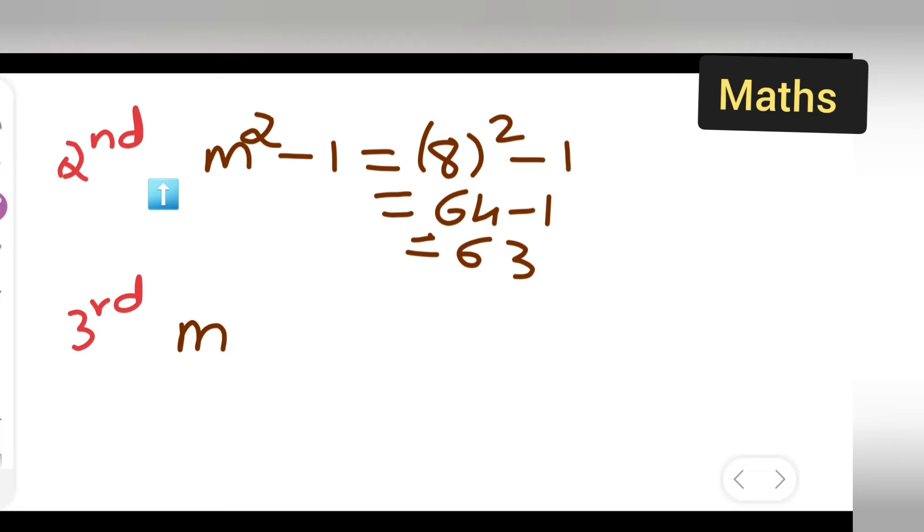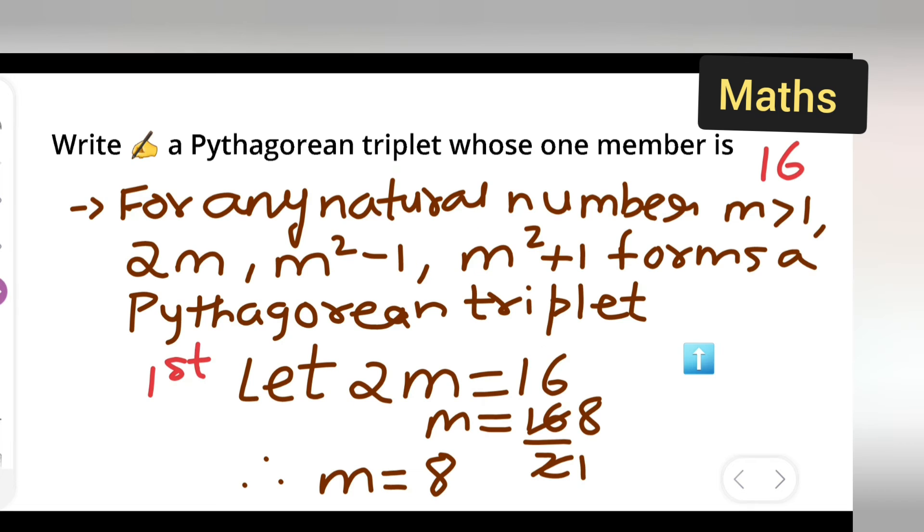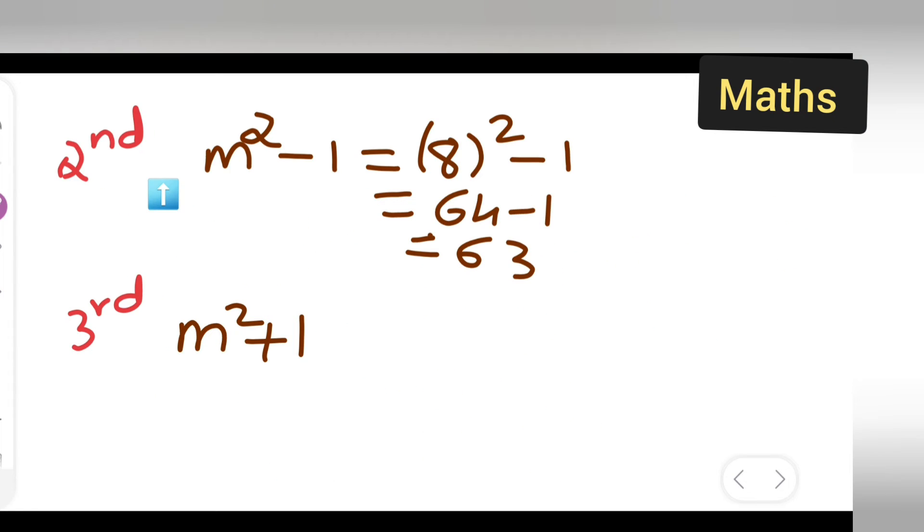And here it will be m² plus 1. How did you get this? These are the m² plus 1 from here. Then write down, what is your m?